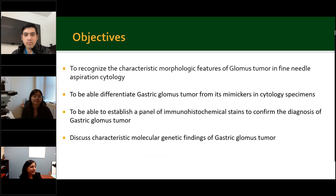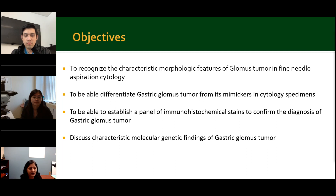The objectives of this article were to recognize the characteristic morphological features of glomus tumor in fine needle aspiration cytology, to differentiate gastric glomus tumor from its mimickers in cytology specimens, to establish a panel of immunohistochemical stains to confirm the diagnosis of gastric glomus tumor, and to discuss the characteristic molecular genetic findings of gastric glomus tumor.